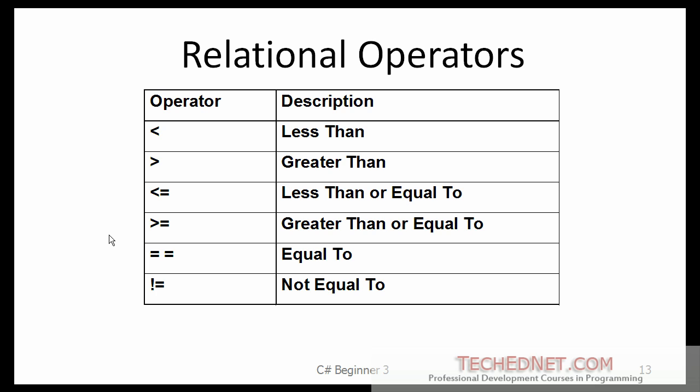The next one is the relational operators. When you want to compare two variables. For example, is A greater than B or is A less than B? You are going to be using these operators. Here is the less than operator, greater than, less than or equal to, greater than or equal to, exactly equal to, and this is called not equal to.